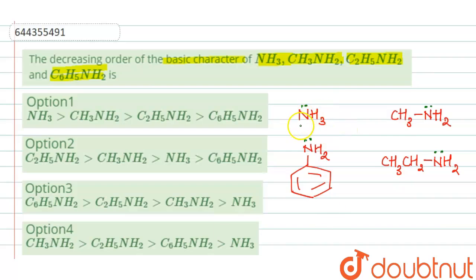So more the electron density on nitrogen atom, more will be their basicity. So now we will compare which one is most basic. In this case, methylamine and ethylamine, due to the plus I effect of these